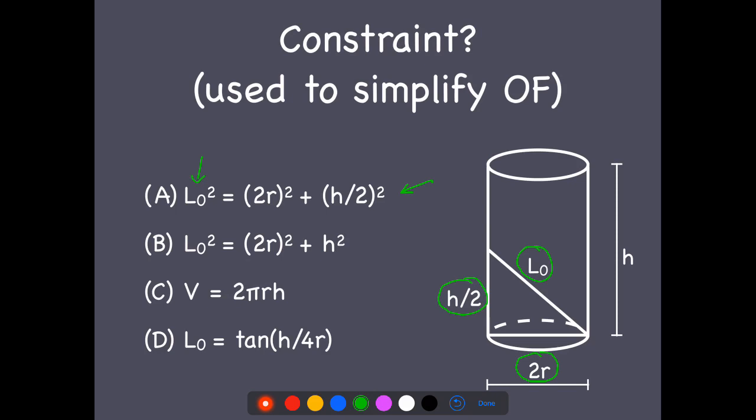We just don't know. He hasn't told us how much he has in his pocket, but it's fixed. And so what this does is it gives us a relationship between r and h. So that actually does look like a constraint.